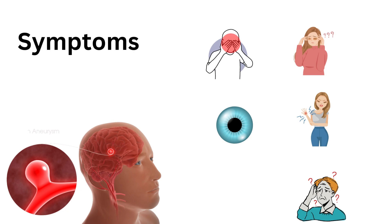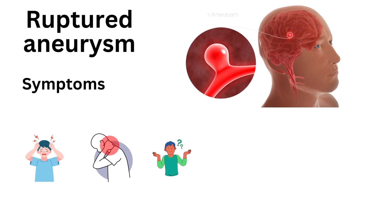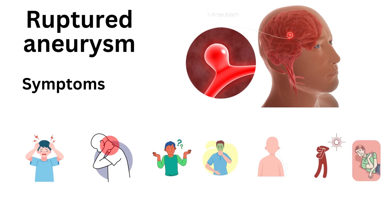Sudden symptoms can mean that the aneurysm has ruptured or burst and that you need medical care right away. Rupture symptoms include a severe headache, stiff neck, difficulty understanding speech, nausea and vomiting, paralysis or numbness, light sensitivity, seizures, and loss of consciousness.